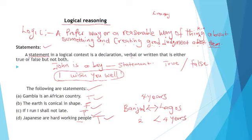In logic, any sentence that is true we represent with 'true,' and if it is not true we represent it with 'false.' In logic we have true or false, and we usually create a truth table to represent each piece of information gathered from these statements.